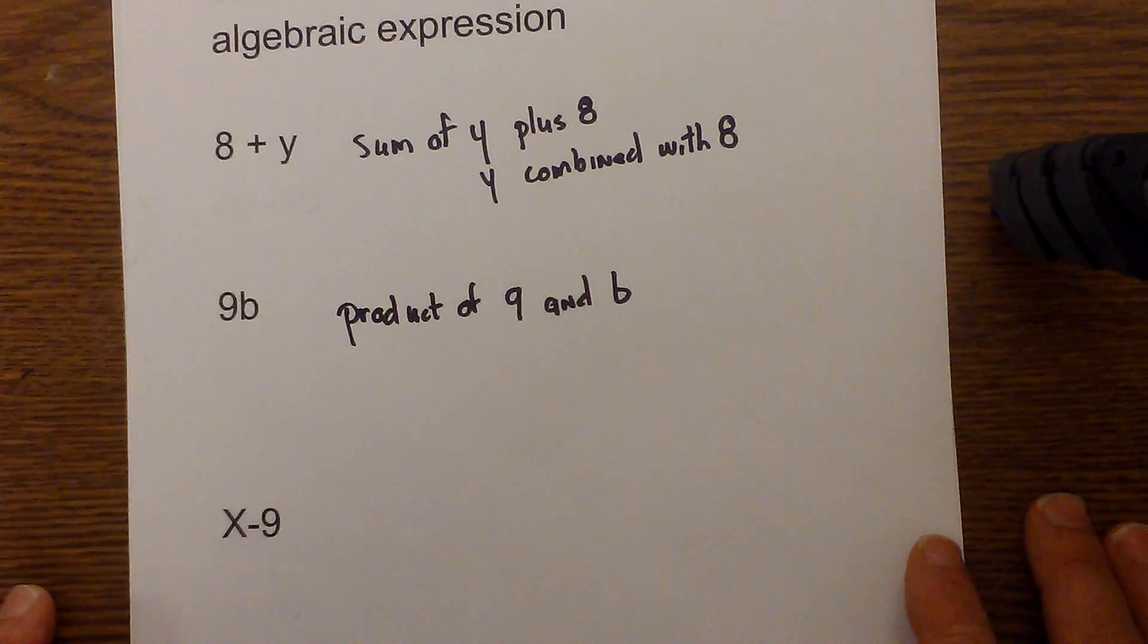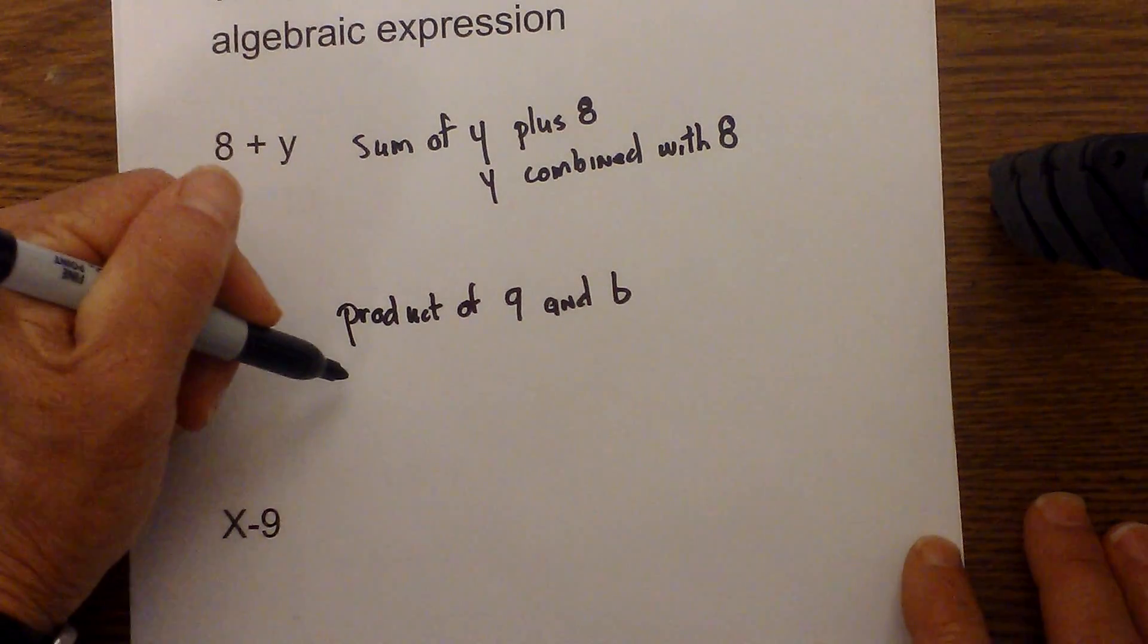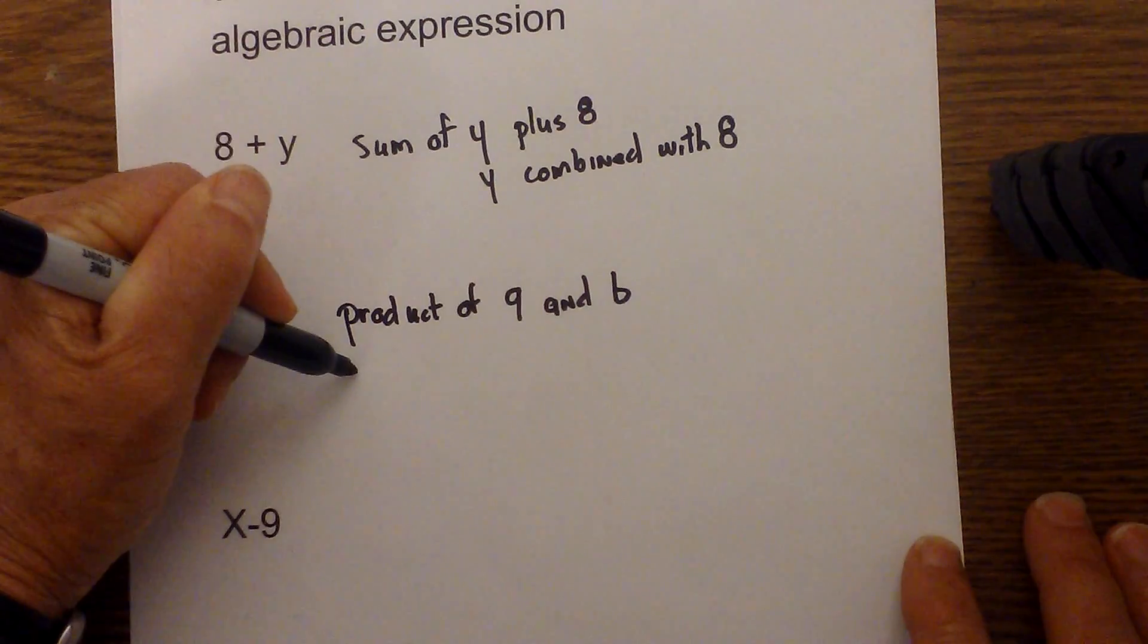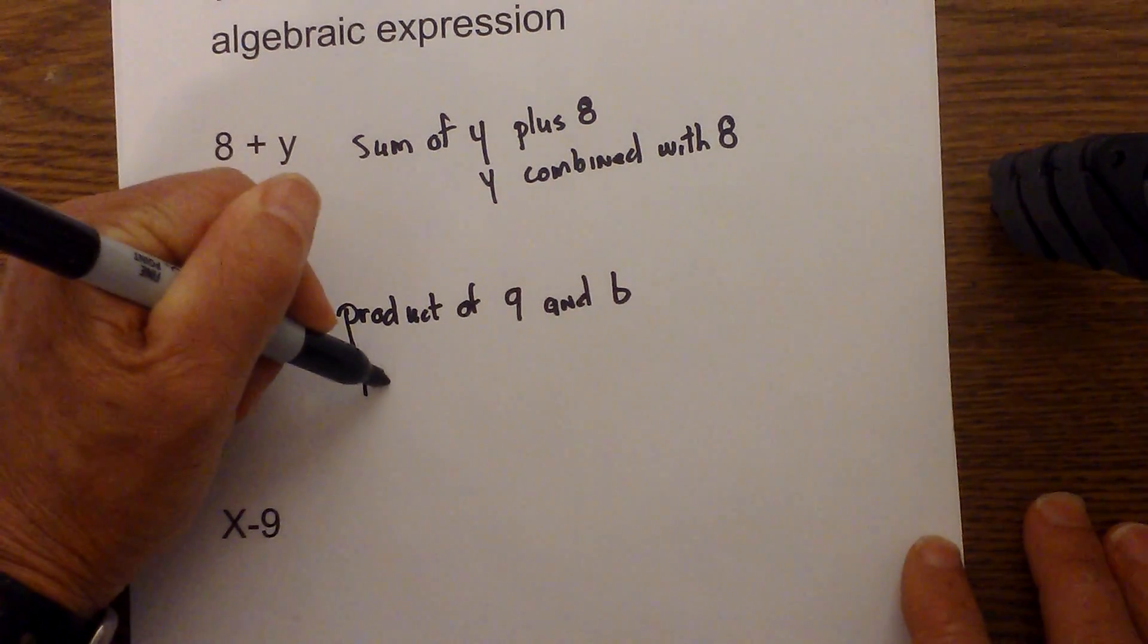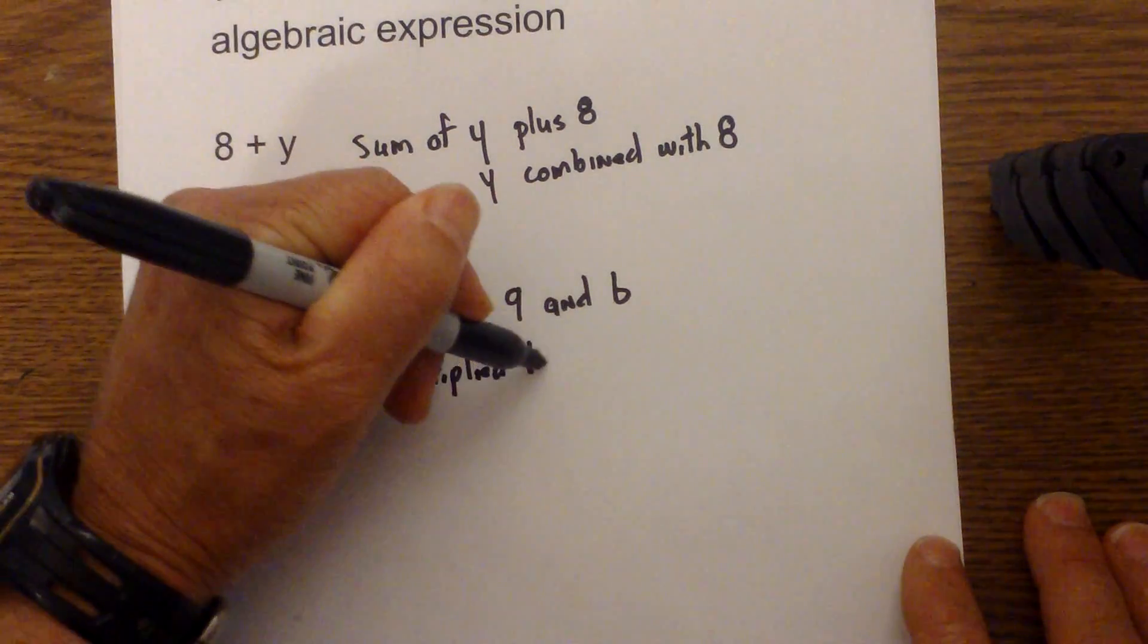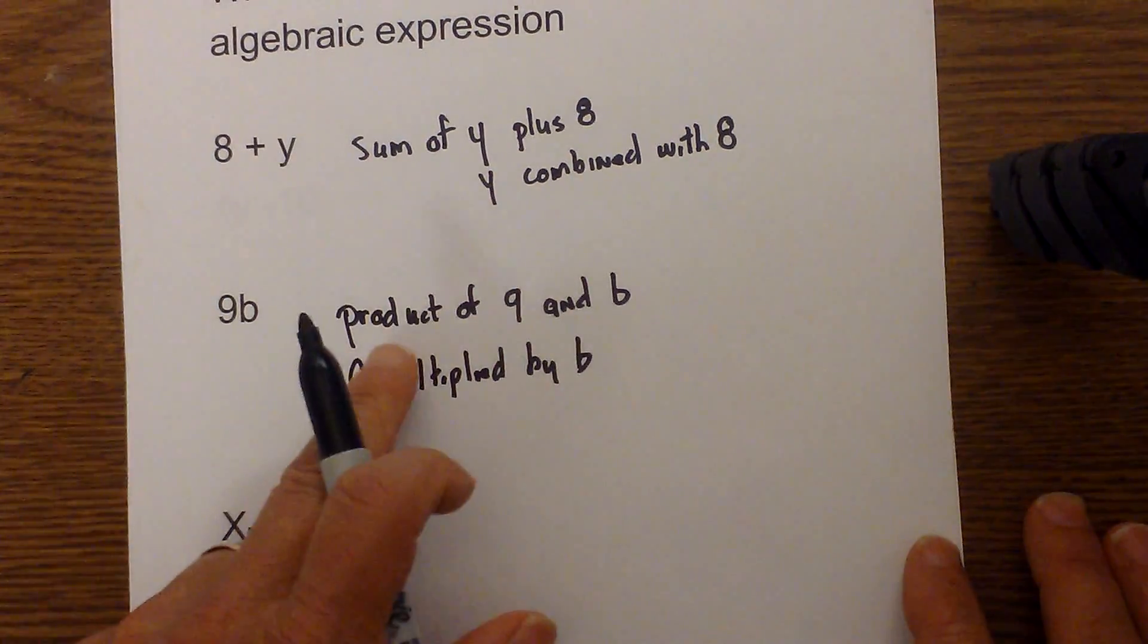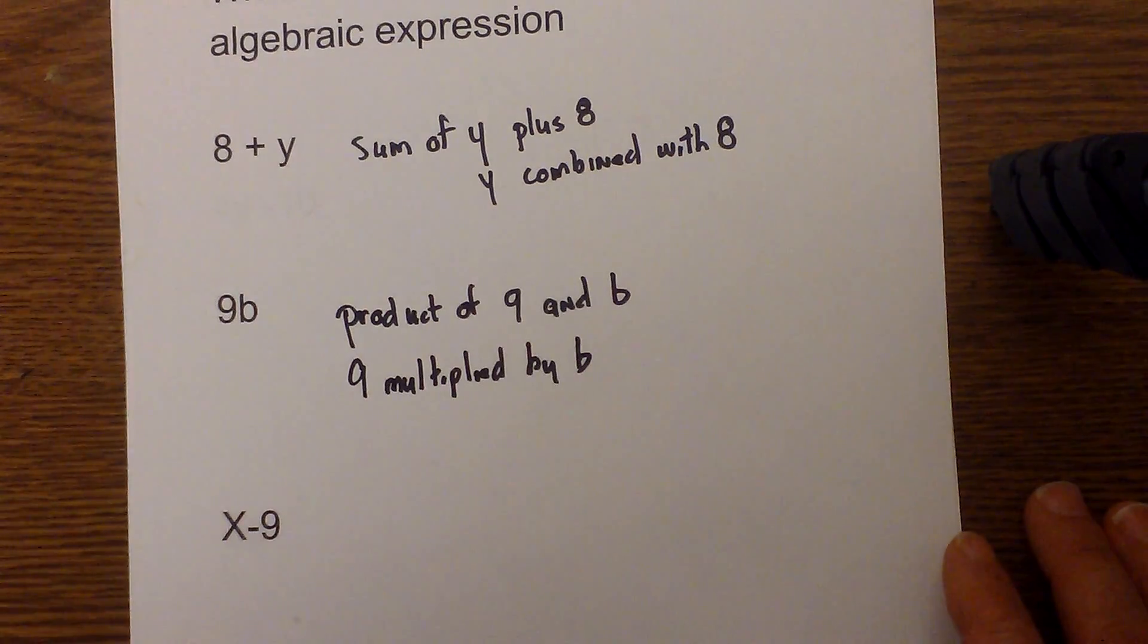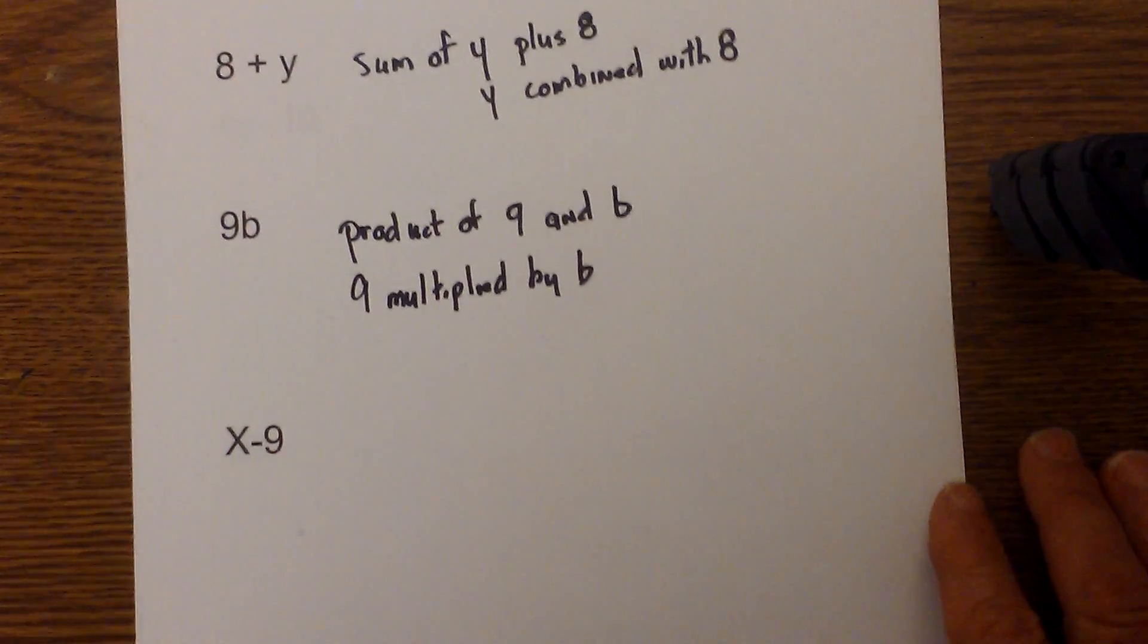If you don't like the word product, you could use nine multiplied by b, okay, but I actually like product of nine and b the best.